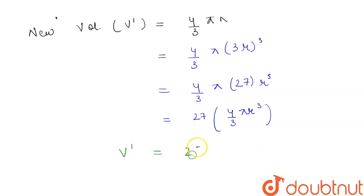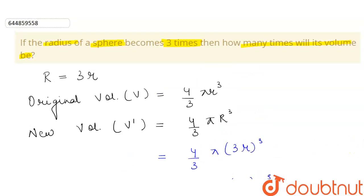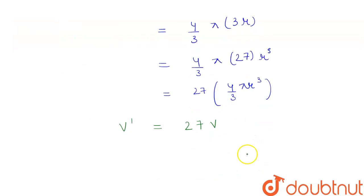So V dash will be equal to 27 of V. Therefore, we see that in the question we were asked that it is how many times of its volume. So we will get our answer to be: it is 27 times of the original volume.